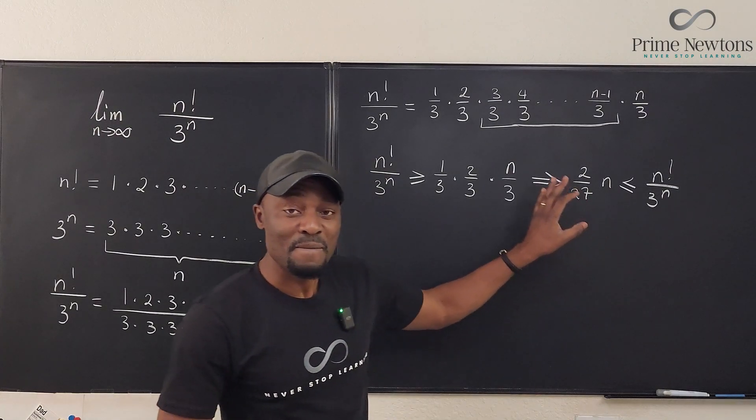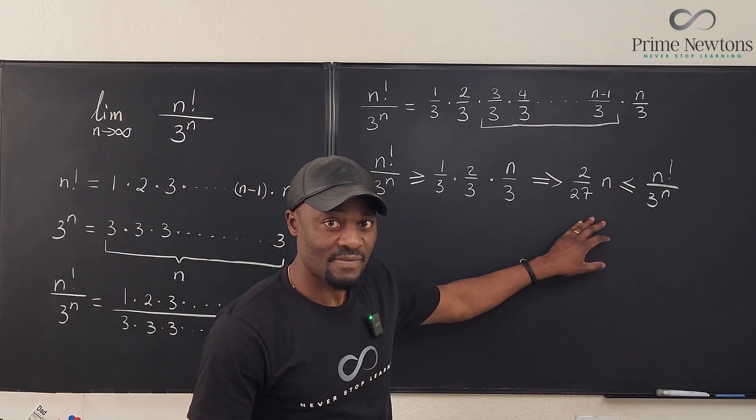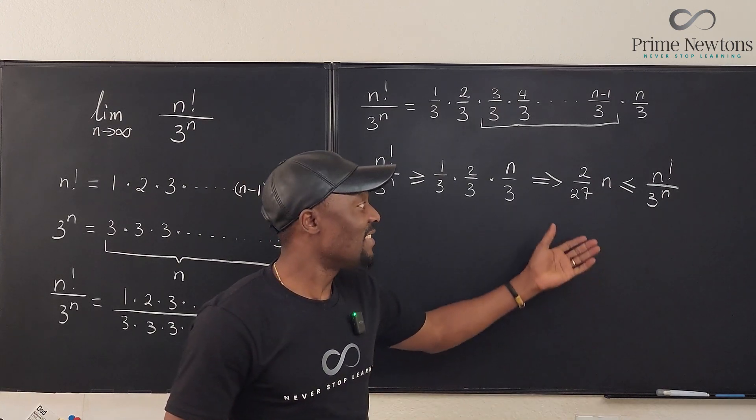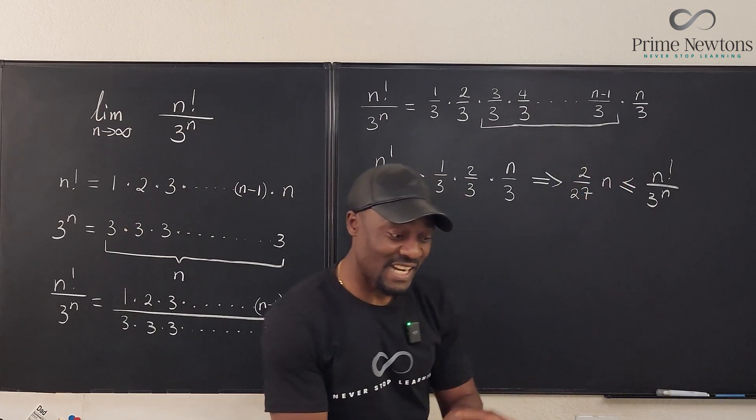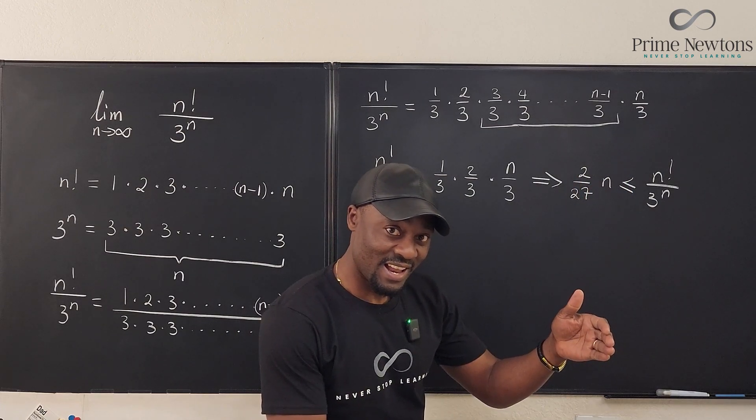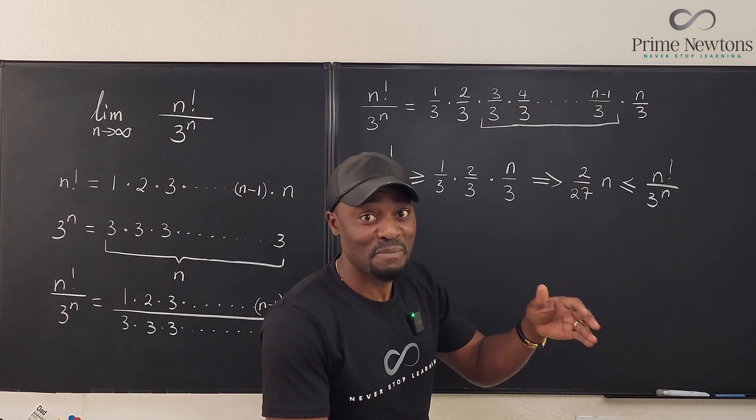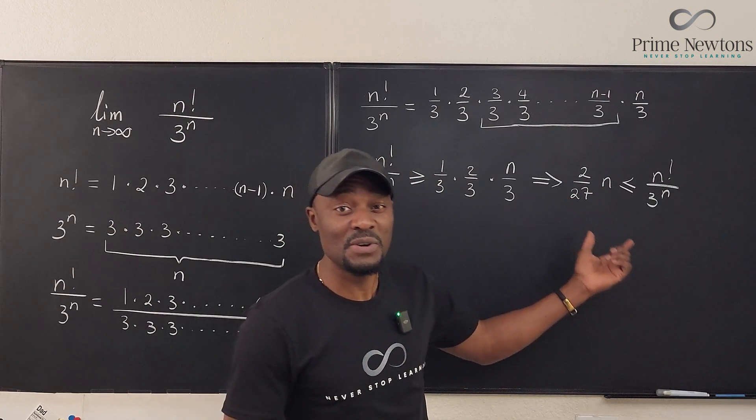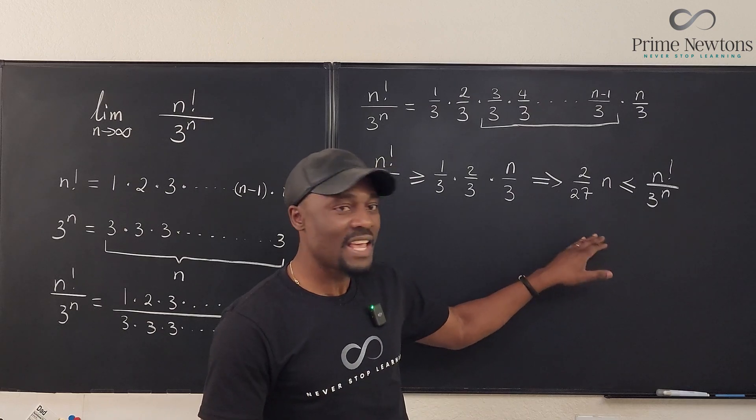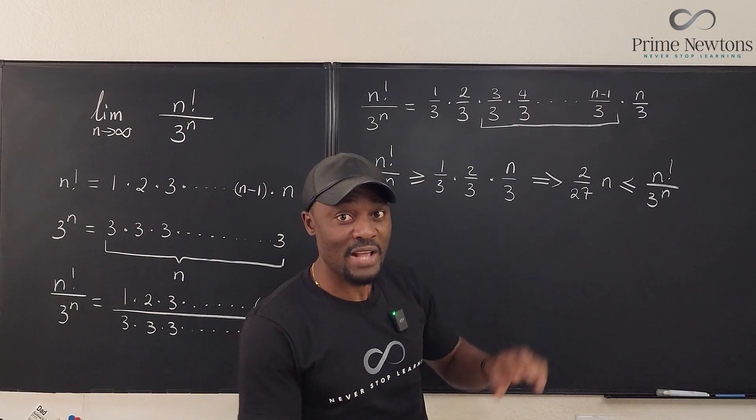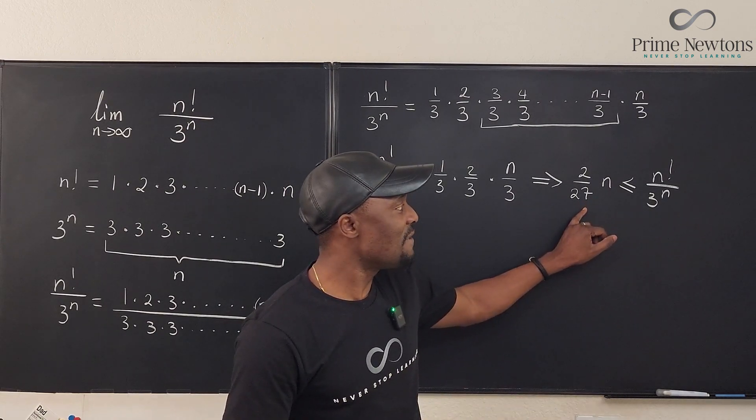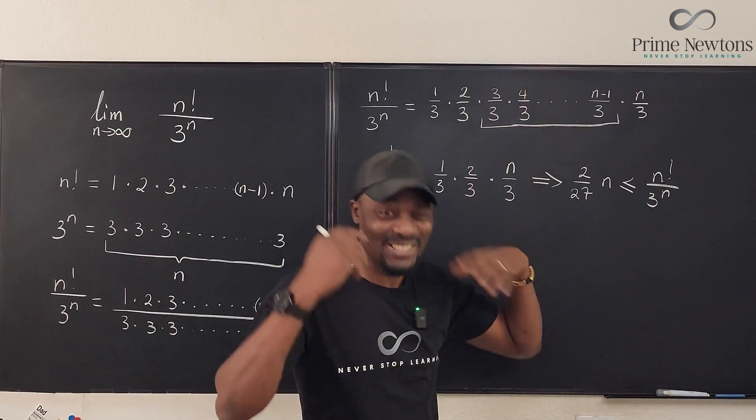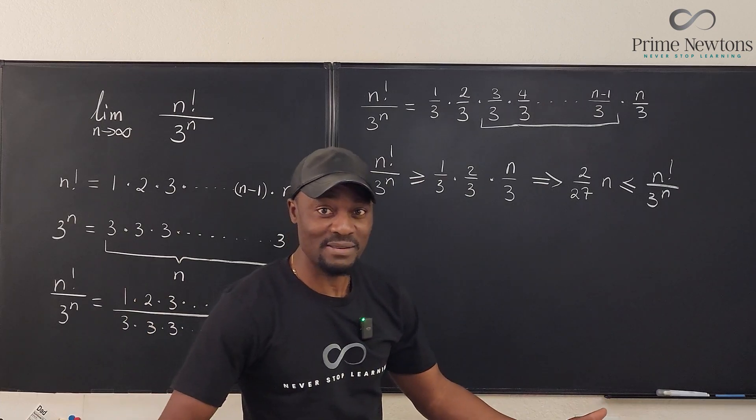Whenever you have a function or a sum or anything that goes to infinity and it is less than another thing and it's under it, I'm trying to show you the direct comparison method here of checking whether something converges or diverges. This is the direct comparison test for divergence. As you can see, if this goes to infinity, anything above it must be pushed to infinity. That's the whole idea of direct comparison.